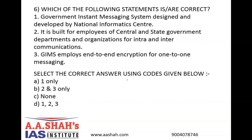Question number 6. Which of the following statements is or are correct? Number 1: Government Instant Messaging System is designed and developed by the National Informatics Centre. Number 2: It is built for employees of central and state government departments and organizations for intra and inter-communications. Number 3: GIMS employs end-to-end encryption for one-to-one messaging. Select the correct answer: A: One only. B: Two and three only. C: None. D: One, two, three — which means all three are correct.